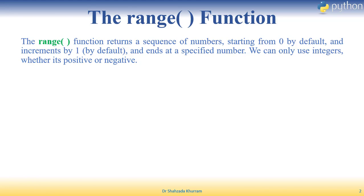If we don't use the range function, then we have to go step by step manually. The range function lets us store a sequence. The second important point is that we can only use integers — not floating point numbers and not strings. The integer value can also be negative; both negative and positive values are supported.